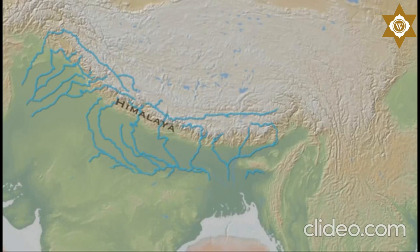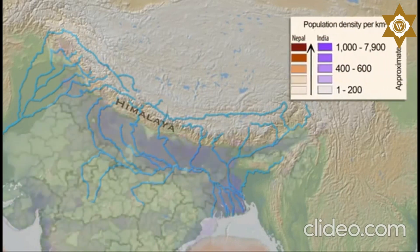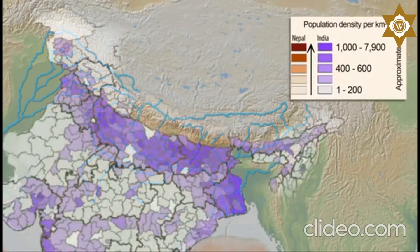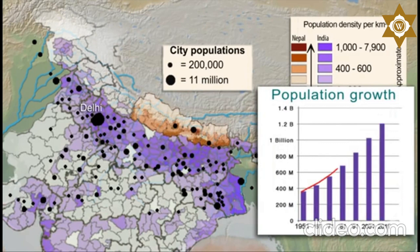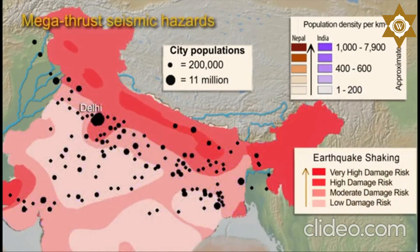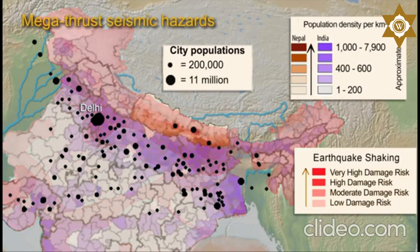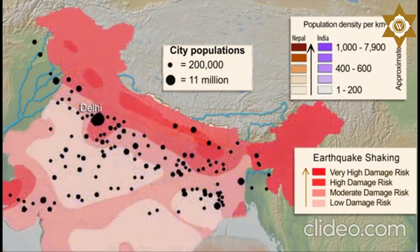Because large amounts of water are provided from Himalayan snow and ice melt, the area south of the mountain range has become densely populated. Since 1950, India's population has grown from 360 million to 1.3 billion people today. When we overlay the seismic hazard map, we see a confluence of high population density in countless vulnerable structures within areas susceptible to strong shaking during earthquakes. Near-boundary cities such as Delhi, with a population of 11 million, may be particularly vulnerable to a megathrust earthquake that ruptures to the surface. Strong buildings and community planning are essential to hazard mitigation.